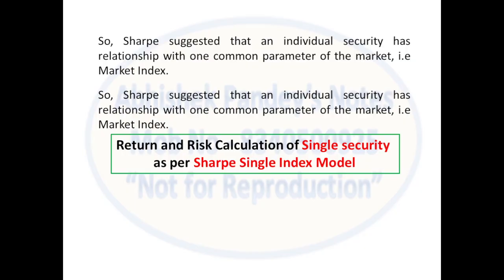Sharpe developed a risk and return formula for a single security using the Single Index Model — where 'single index' means the market index. The return is discussed in two ways: one is the market return, and the other is the quality of the stock itself. All stocks have a certain relation with the market index, so the market is certainly one of the factors. If the market gives a return in a year, the stock is also giving a return — it might give more return than the market or less return than the market.